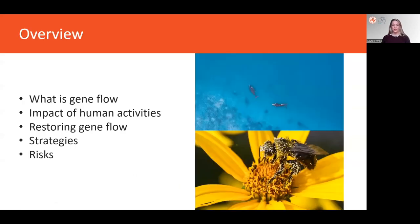This module, I'll first describe what I mean by gene flow, and then talk about the impact that human activities have had on gene flow and the consequences that this has for threatened species. I'll describe how restoring gene flow can overcome some of these negative impacts and the strategies for doing so. Finally, I'll talk about some of the risks that are inherent in restoring gene flow and how they should be weighed up against the risk of not taking action at all.